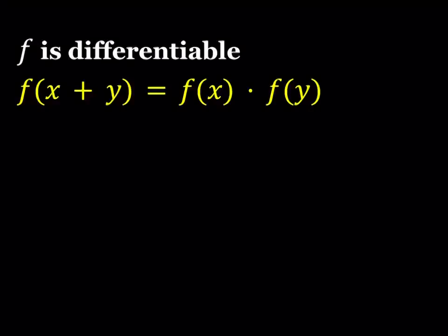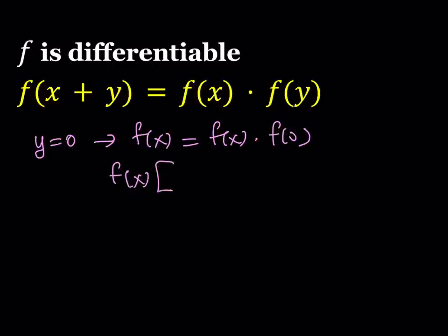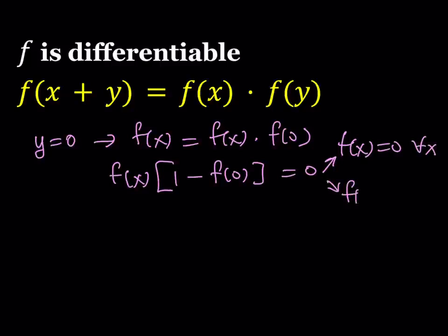I'm going to start by replacing y with 0, and that gives us f of x equals f of x times f of 0. One of the good strategies is to replace something with 0 or 1 — in many functional equations this seems to work. From here I can factor the f of x out, giving me f of x times the quantity 1 minus f of 0 equals 0. So this gives us two solutions: either f of x is equal to 0 for all x values, or f of 0 is equal to 1.